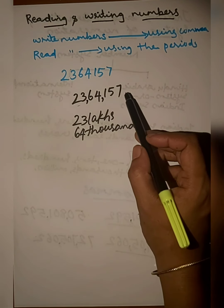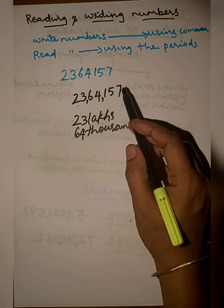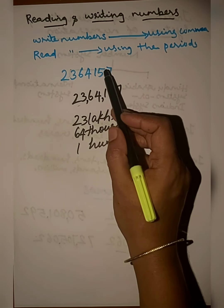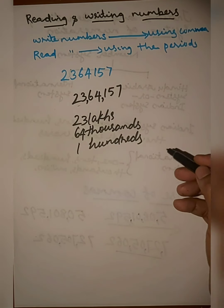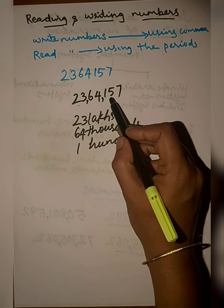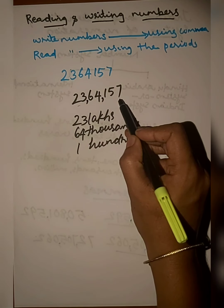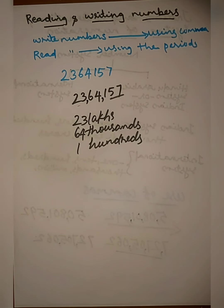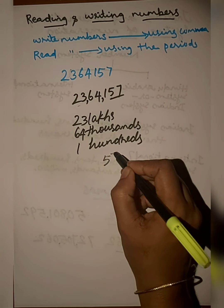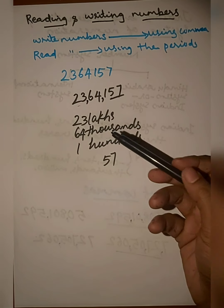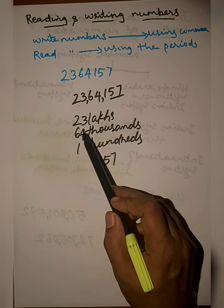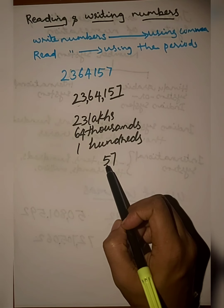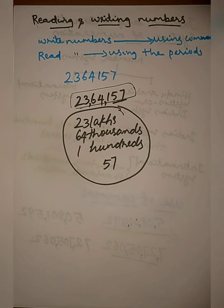The second step is to find how many thousands — here it is 64 thousand. The third step is to read the hundreds — here it is one hundred. The last step is to read the last two digits, the tens and ones together. Here the tens digit is 5 and the ones digit is 7, so we read 57. The full number is: twenty-three lakh sixty-four thousand one hundred fifty-seven.